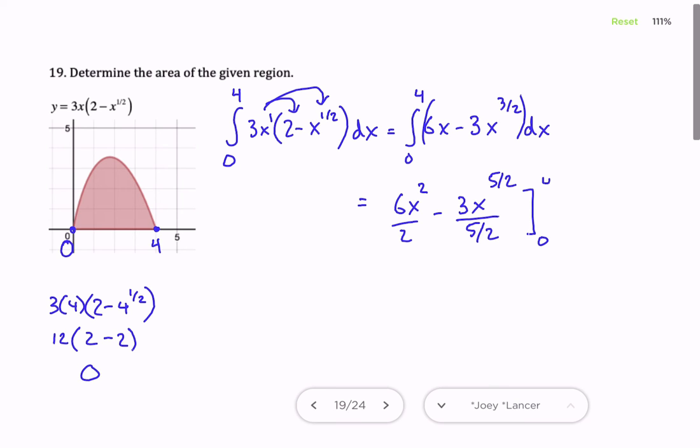We'll evaluate that from 0 to 4, and we'll simplify to make it easier to calculate. 3x squared here, instead of divide by 5/2, multiply by 2/5, so 3 times 2/5 would be 6/5, and x to the 5/2.